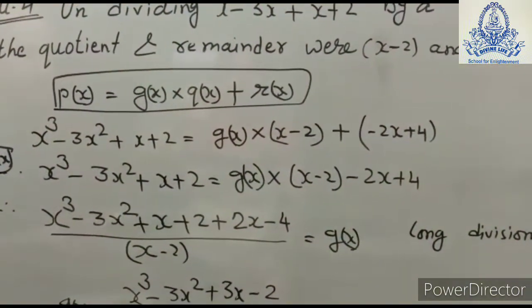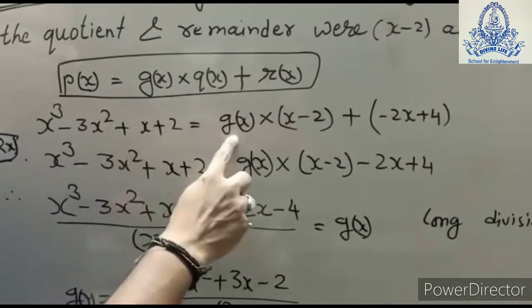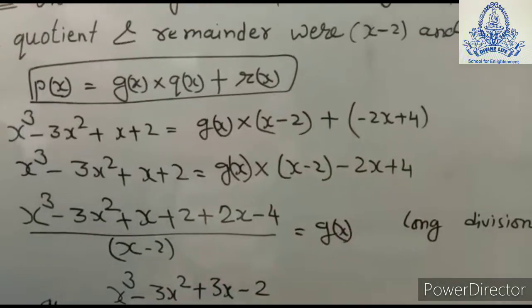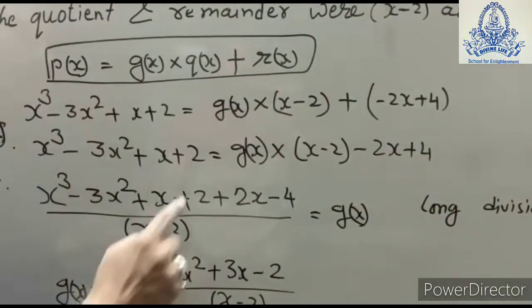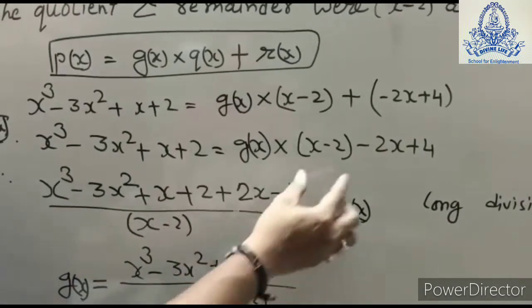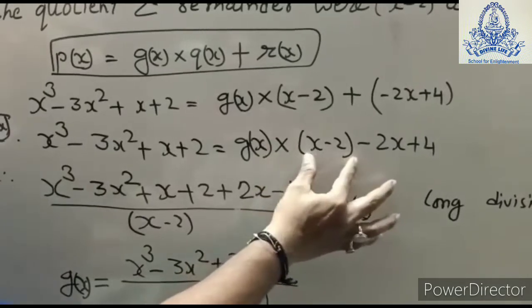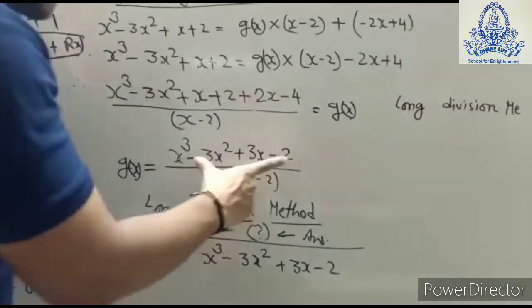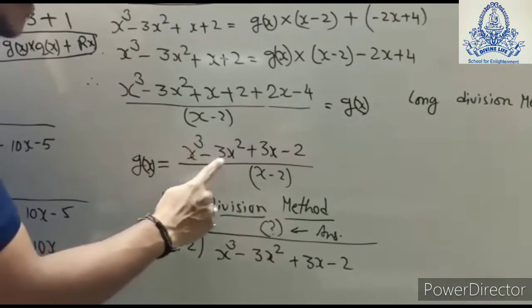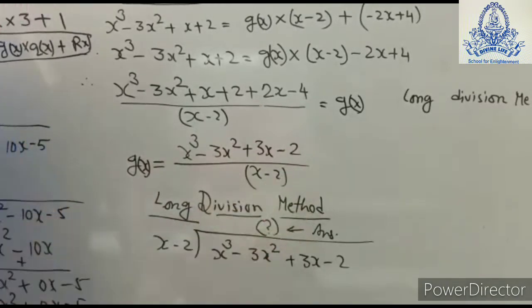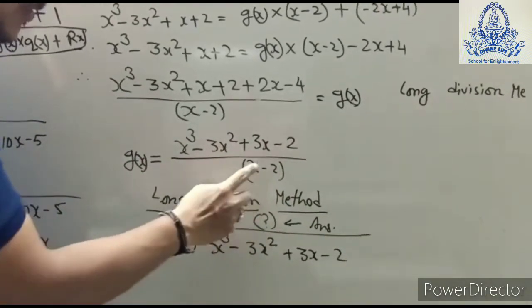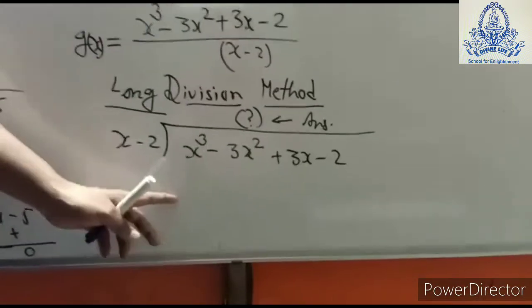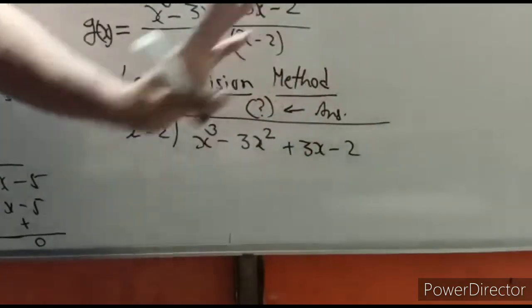Substituting, we open the bracket and the term −2x + 4 moves to the other side, changing its sign. The term x − 2 is multiplied with g(x), so g(x) equals the numerator divided by (x − 2). After solving the numerator, we get x³ − 3x² + 3x − 2, divided by x − 2. Use long division to find the quotient, which is your g(x).